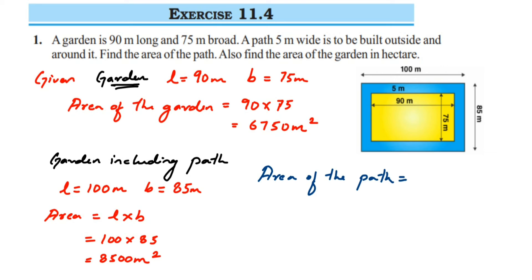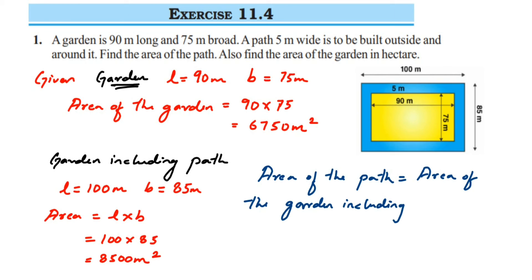We're going to first write down the area of the garden including path, because this is the bigger value, and then subtract the area of the garden. Now let us substitute the values: 8500 minus 6750.